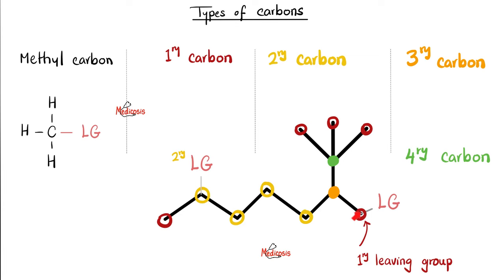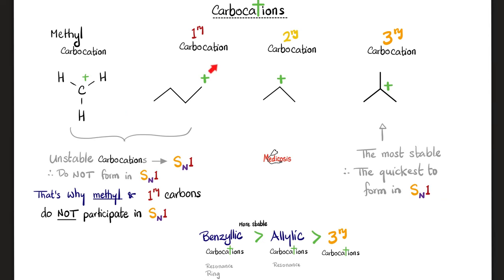A group bonded to a primary carbon is called a primary leaving group. If OH is attached to a primary carbon, it's a primary alcohol; attached to a secondary carbon: secondary alcohol. The same applies to carbocations — a positive charge on a primary carbon is a primary carbocation; on a secondary carbon: secondary carbocation; on a tertiary carbon: tertiary carbocation. Why is this positively charged? We need to calculate the formal charge.